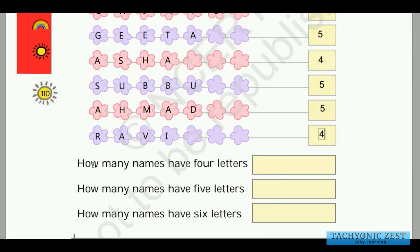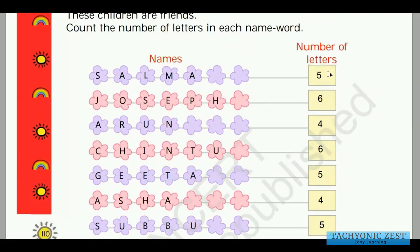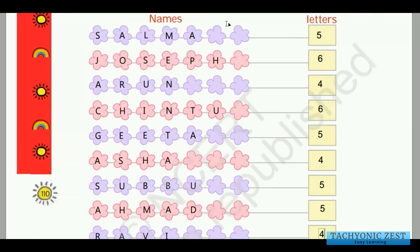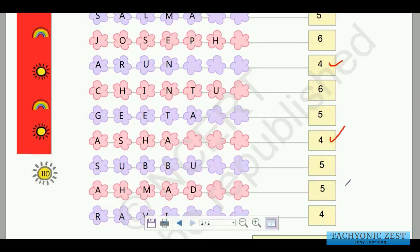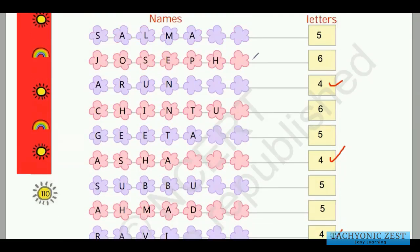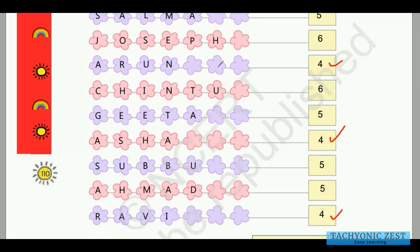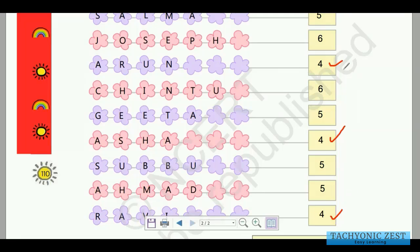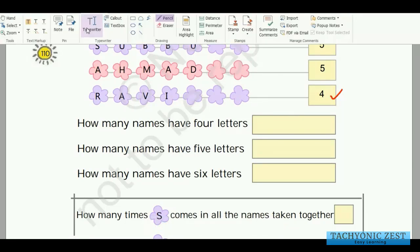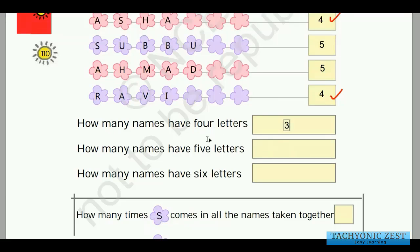The next question asks: how many names have four letters? Let us tick-mark the names with four letters. Arun has four letters, Asha has four letters, and Ravi has four letters. Counting them: one, two, three — so there are 3 names with four letters. The answer is three.